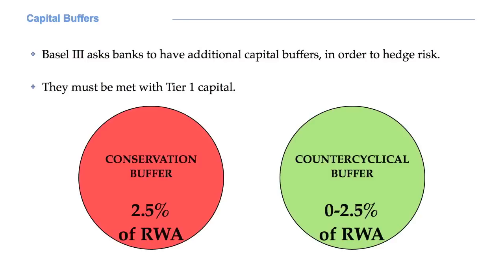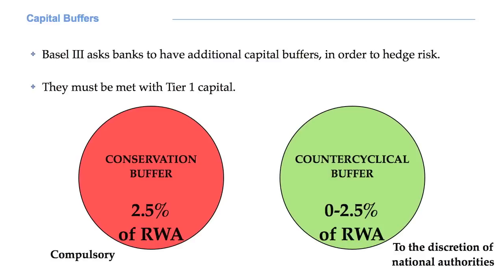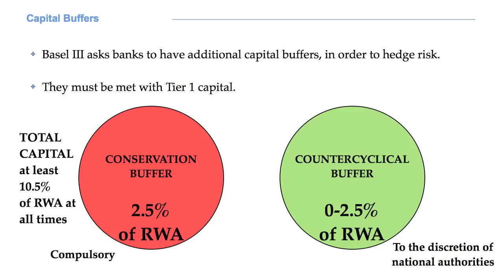The conservation buffer corresponds to 2.5% of the risk-weighted assets. It is meant to ensure that banks build up capital during good times, so that they are more able to cover losses during periods of financial difficulty. The counter-cyclical buffer goes from 0 to 2.5%. The conservation buffer is compulsory for all banks, while the counter-cyclical buffer is left to the discretion of national authorities, hence it can vary from country to country. Because of the conservation buffer, the total capital requirements of a bank increase to 10.5% of risk-weighted assets at all times.